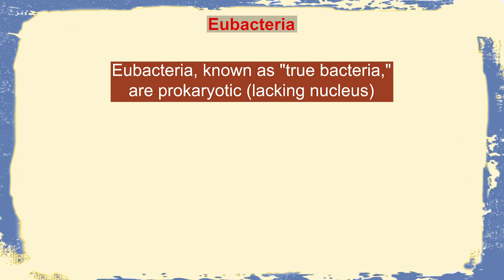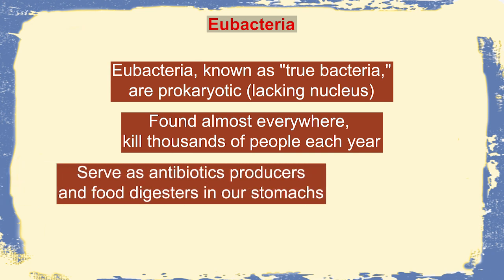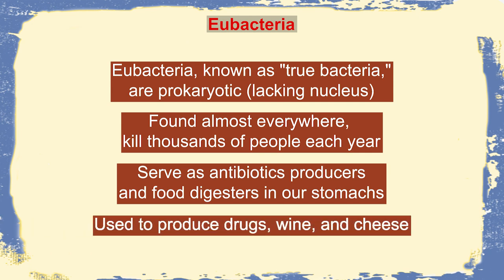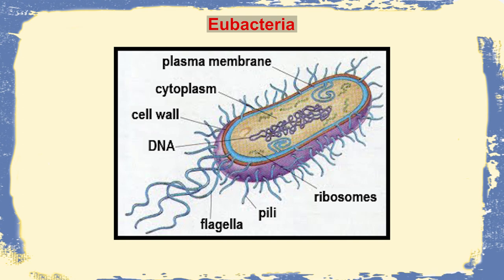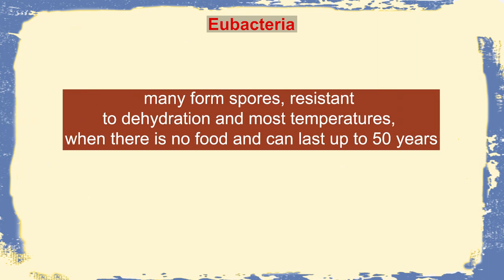Now we come to eubacteria — the category we will focus on most. Eubacteria, known as true bacteria, are prokaryotes that lack a nucleus. They are found almost everywhere and can kill thousands of people each year. They can also produce antibiotics, food digesters in our stomachs, drugs, wine, and cheese, and contribute immensely to industrial microbiology. They lack mitochondria and chloroplasts but have a rigid cell wall made of peptidoglycan, flagella, and a phospholipid bilayer cell membrane. Many are capable of forming spores that make them resistant to dehydration and high temperatures.